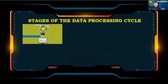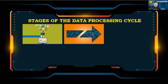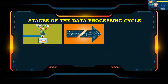Data Collection: The collection of raw data is the first step of the data processing cycle. The type of raw data collected has a huge impact on the output produced. Data Preparation: Data preparation is the process of sorting and filtering raw data to remove unnecessary and inaccurate data. Raw data is checked for errors, duplication, miscalculations, or missing data, and transformed into a suitable form for further analysis and processing.